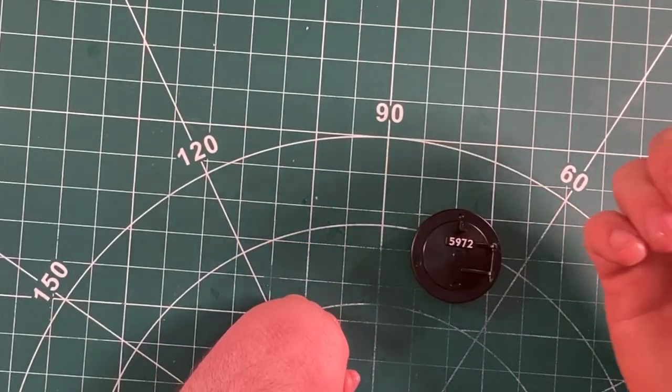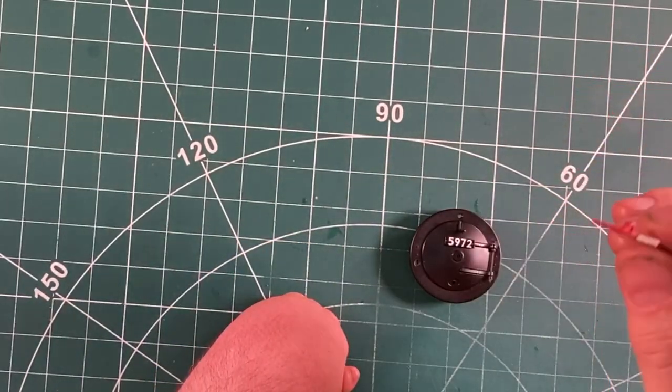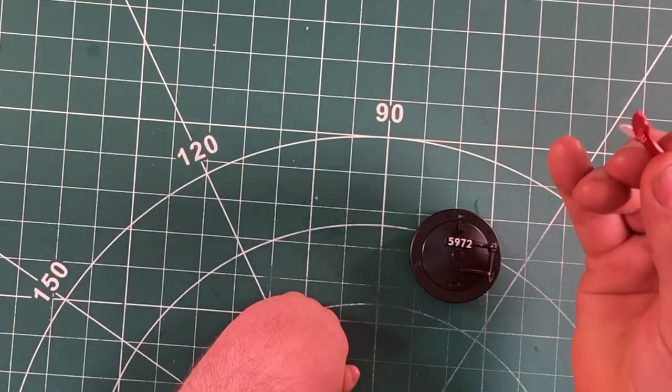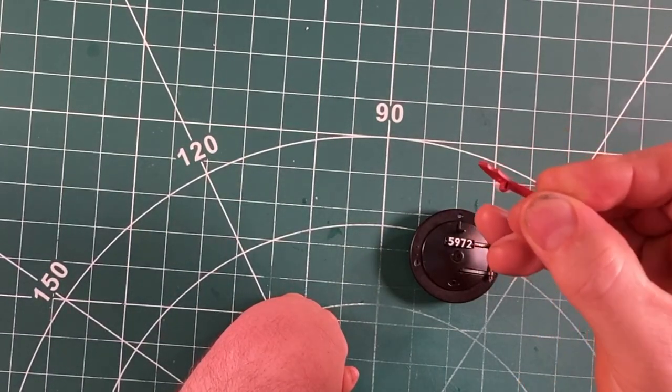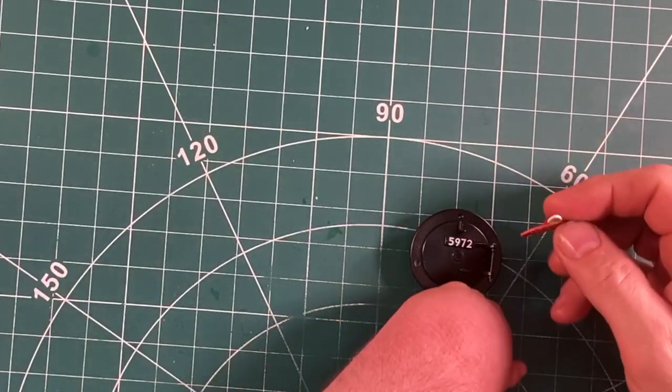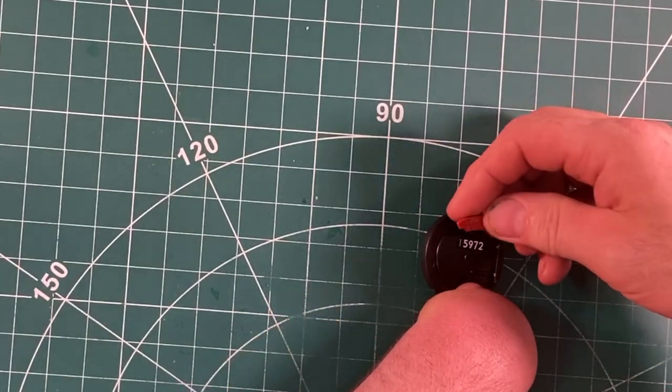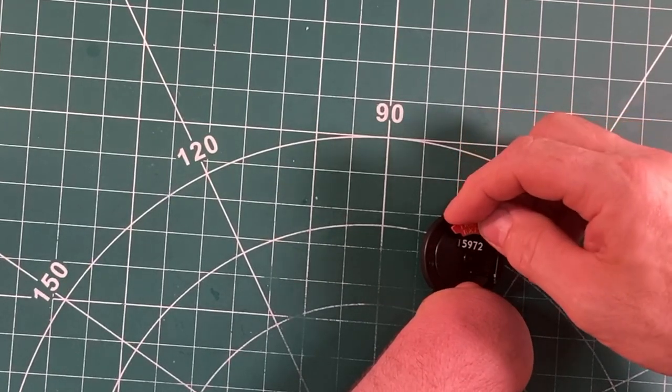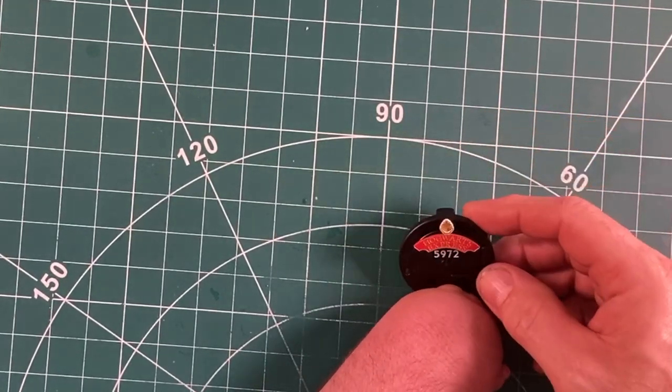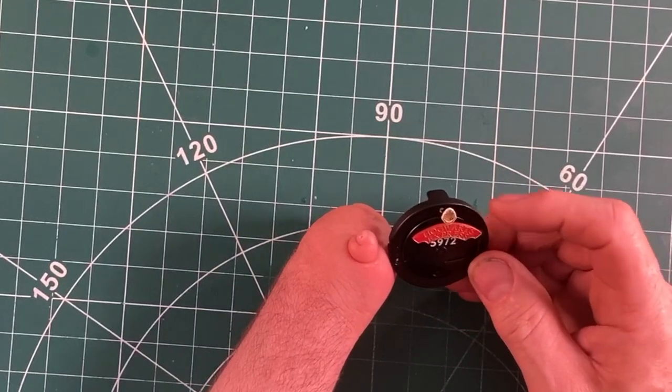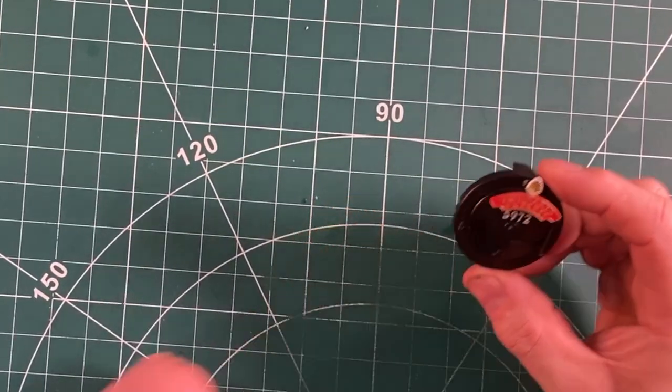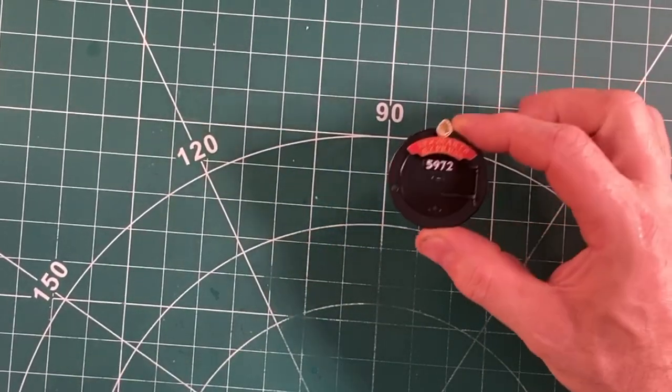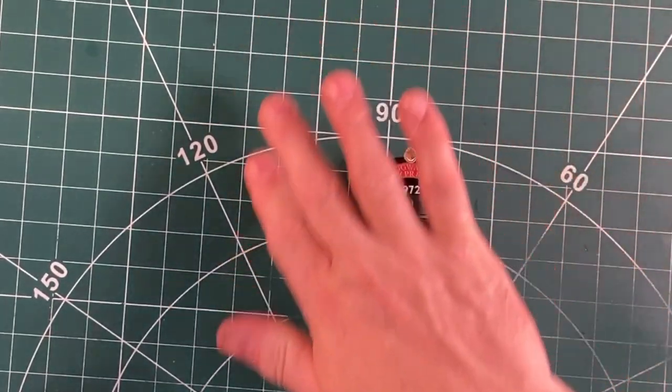And then on this emblem of Hogwarts Express, that's got a little U shaped hole. And that corresponds with that plate there on the front. And that just sits there. You don't glue that in at this stage because there's more bits to go on. So there you go. That's part one of build your own Hogwarts Express.